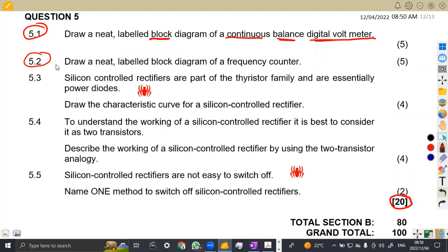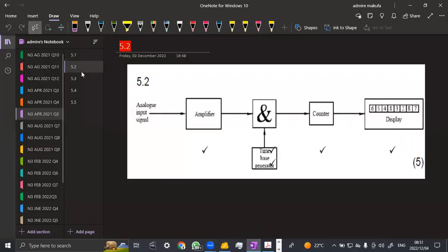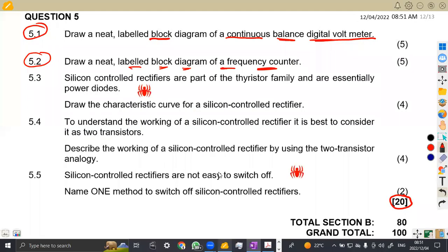Then 5.2, draw a neat labeled block diagram of a frequency counter. So we've got our frequency counter. It's not the same, but if you check, you will see. Make sure that you know these diagrams, how they are presented. You have the analog input signal, the amplifier, the time-based generator, the counter to the display. That is what we have. So make sure that the block diagram you indicate properly answers the question. When you're asked to draw, if it is to explain, then you must explain. There, it was just to draw.